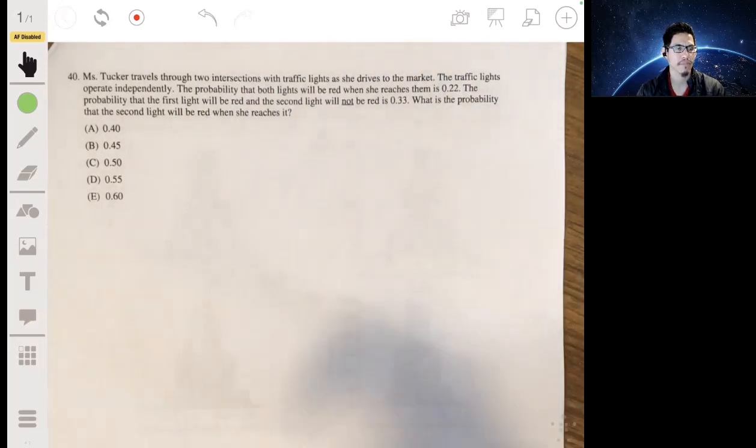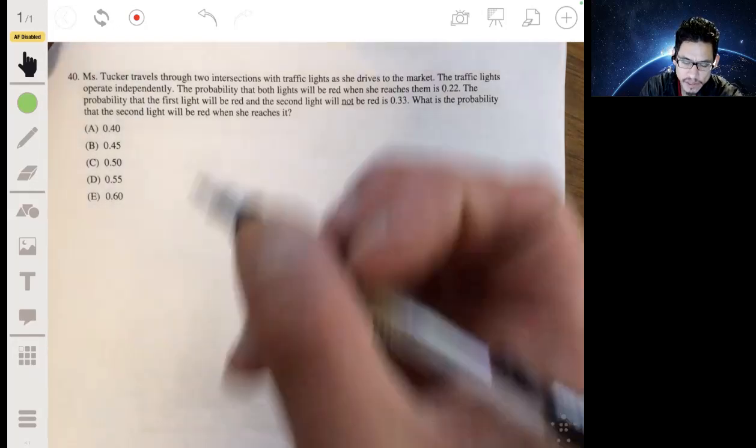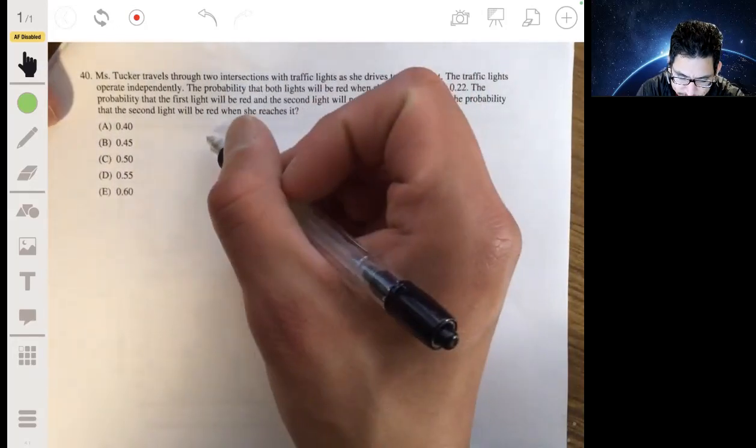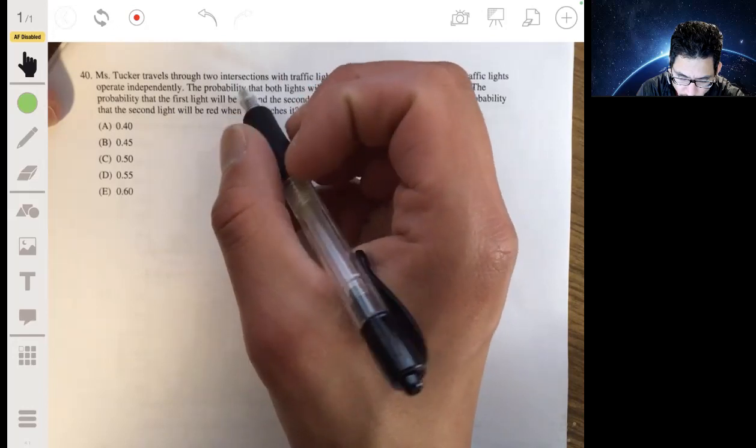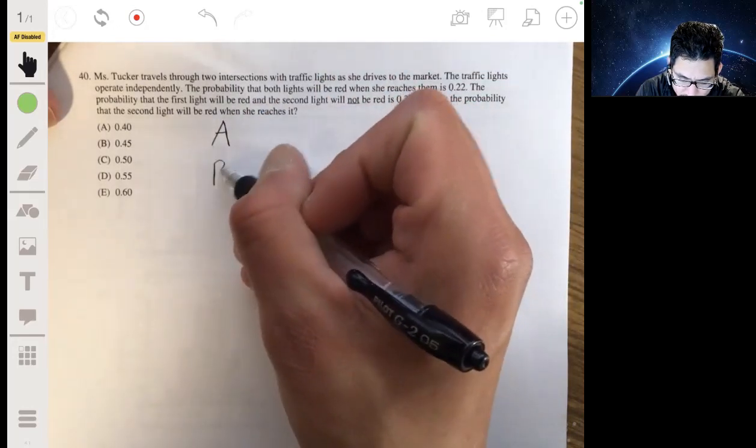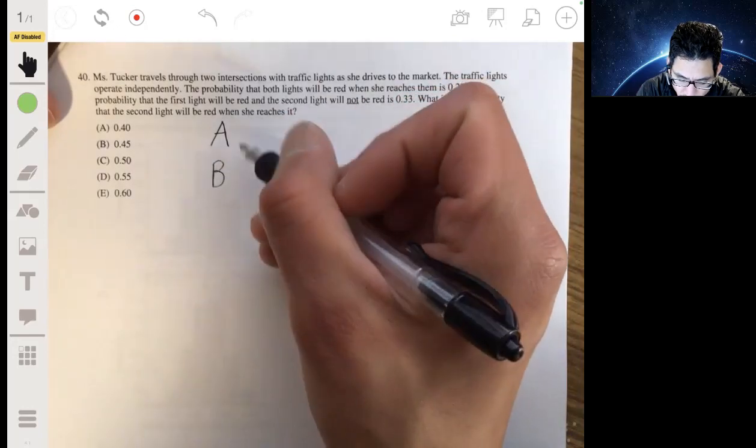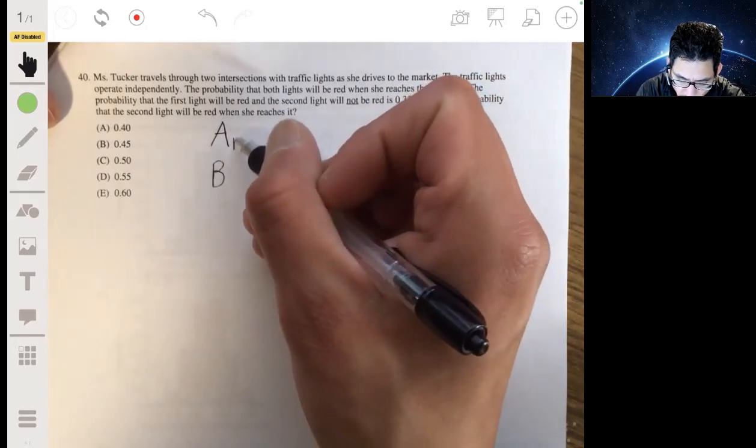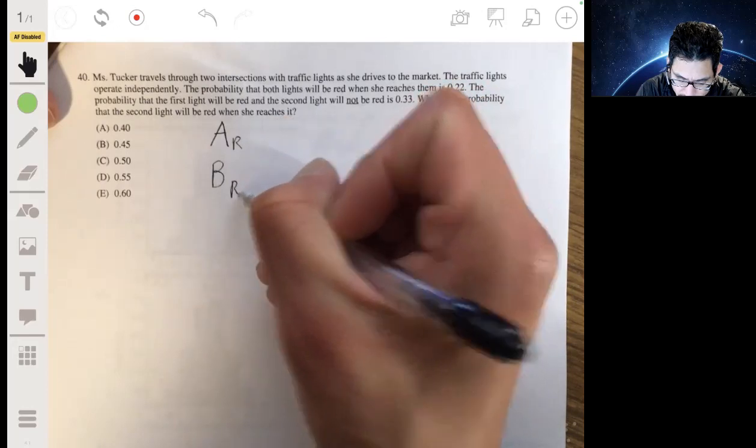Interesting. So let's have something to represent the first light being red, the second light being red. So let's have A be the first light, B be the second light, and we'll say that AR, that's when the first light is red, BR is when the second light is red.